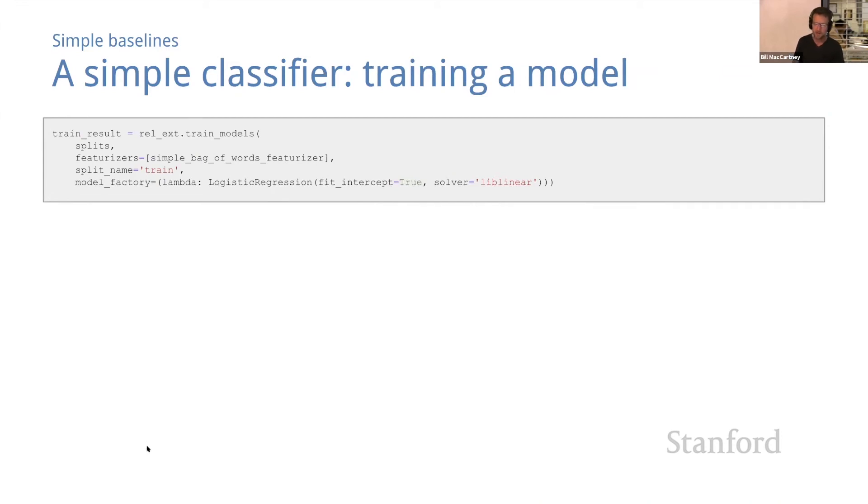Okay, we have our simple bag of words featurizer. Now we need a way to train models to make predictions and to evaluate the results. The relics module contains functions for each of those, and so I just want to give you a quick tour of what those functions are. But you'll definitely want to go read the code for this so that you're more familiar with how it can be used. And a lot of this code appears in a file called rel_ext.py. So we'll start with a function called train_models.